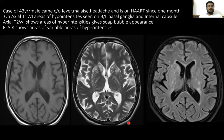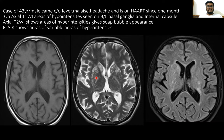Here is a case of a 43-year-old male presenting with fever, malaise, headache, and on HAART for one month. On axial T1-weighted images, there are areas of hypo-intensity in the bilateral basal ganglia and internal capsule. On axial T2-weighted images, hyper-intensity lesions coalesce to form a soap bubble appearance in the region of the basal ganglia and caudate nucleus. On FLAIR, there are variable areas of hyper-intensities.